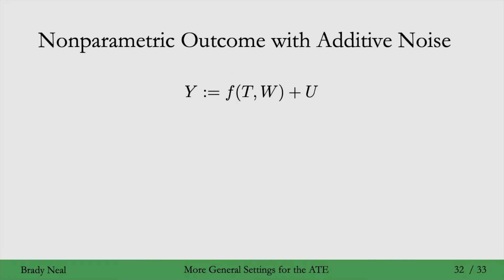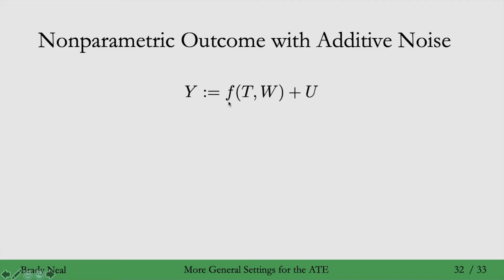In the first class of methods, they let us model the structural equation for Y as some very flexible function of treatment and observed confounders, plus some additive unobserved noise. The really important assumption here is that the noise is additive — U only enters into the structural equation for Y additively, rather than as a general function F of T, W, and U.